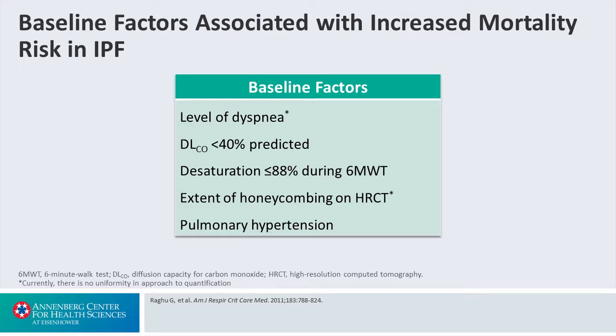The greater the extent of honeycombing on HRCT, the worse the prognosis, and similarly for pulmonary hypertension. If patients develop pulmonary hypertension, this generally portends a significantly worse outcome.